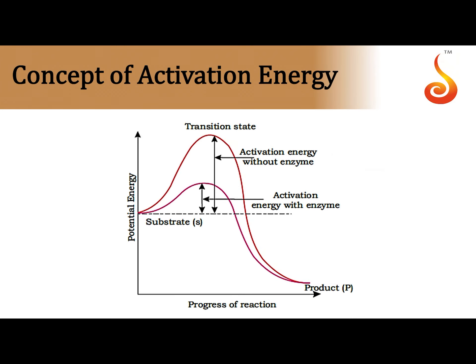How exactly does the enzyme increase the rate of a chemical reaction? Looking at the first graph, the ultimate goal of the reaction is for a substrate molecule to get converted into a product molecule. Every substrate molecule already has a certain amount of energy in it, referred to as potential energy. Now imagine there is no enzyme.